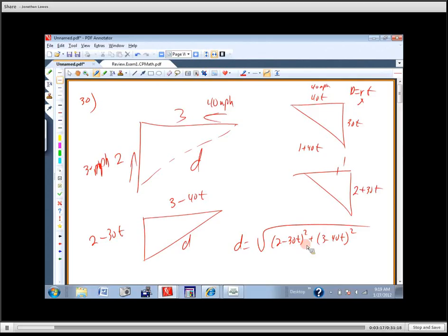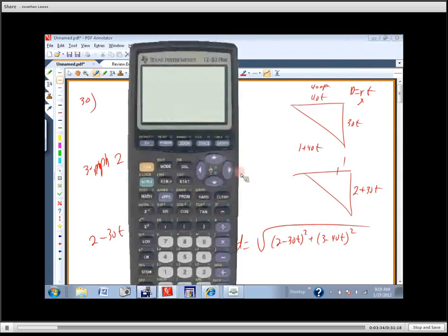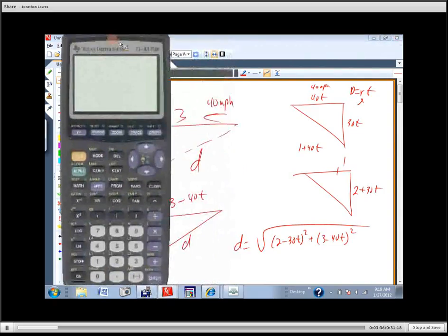So it says express the distance D between the cars as a function of time. There it is. And it says use a graphing utility to find what value of T is D the smallest. We're not going to use calculators on the test. Nope. So could I ask you to set something like this up? Sure. Could I ask you to do this next part? Nope. No calculator on the test. You really don't need a calculator of any type. The numbers are pretty darn small.